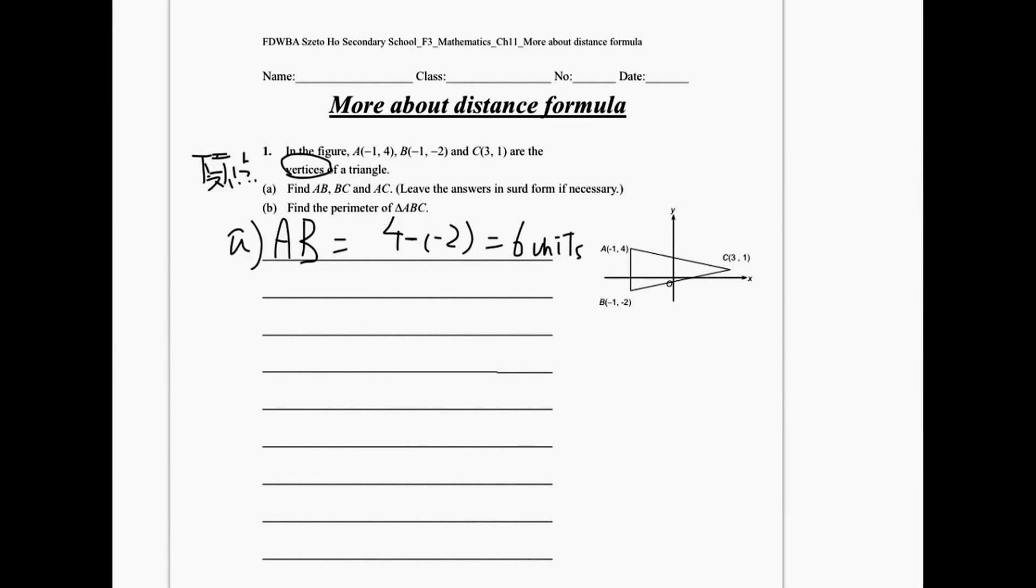For the length BC, we have to use distance formula. So BC, let's say point B is x₁, y₁, and C is x₂ and y₂. By using the distance formula, it is equal to negative 1 minus 3 all square plus y₁ minus y₂, negative 2 minus 1 all square. And then, square root equals... So this is how we can find BC.